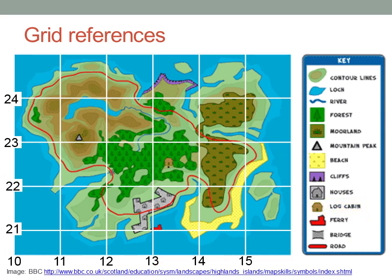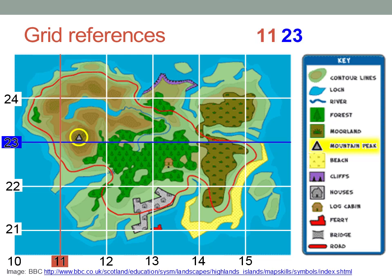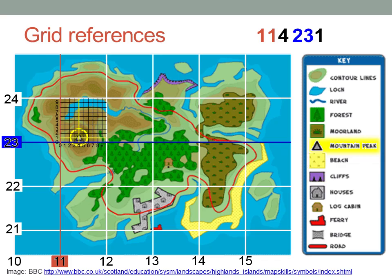Let's try another one. That mountain peak is at an easting of eleven and a northing of twenty-three. But if I want to be more precise, I can imagine the square is divided up into ten sections each way. And there's the six-digit grid reference. Remember, always use the corner at the bottom left of the square of interest.